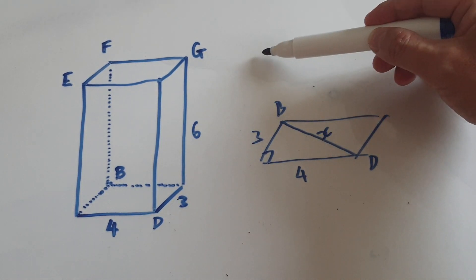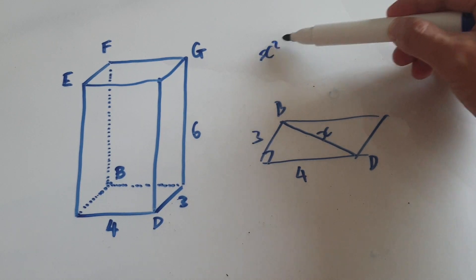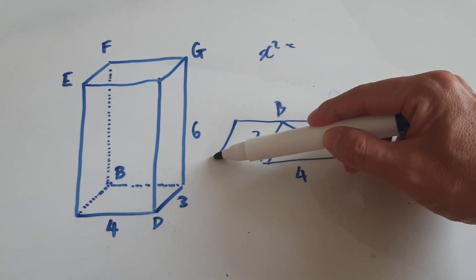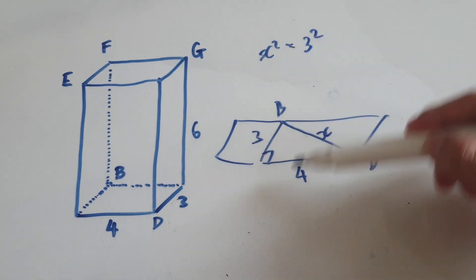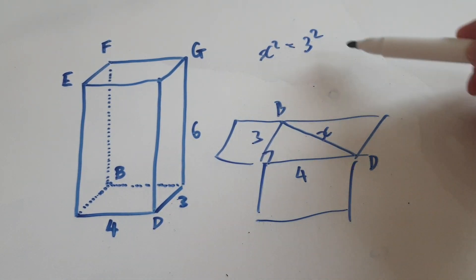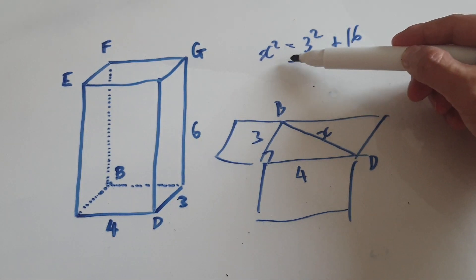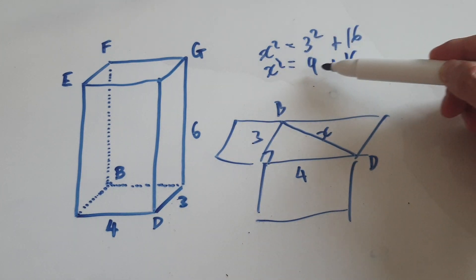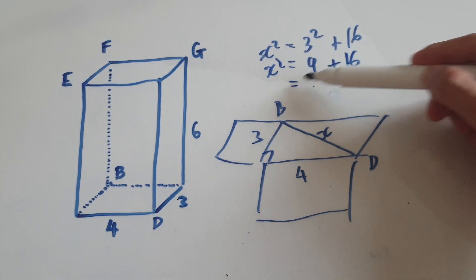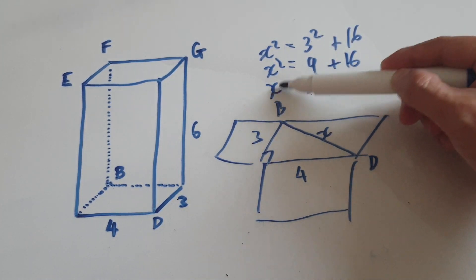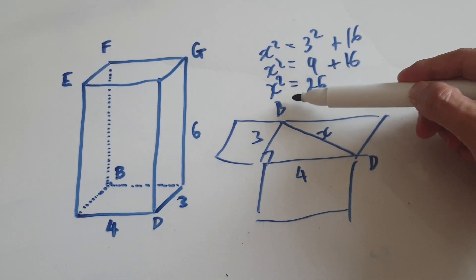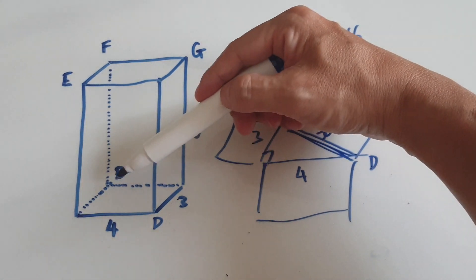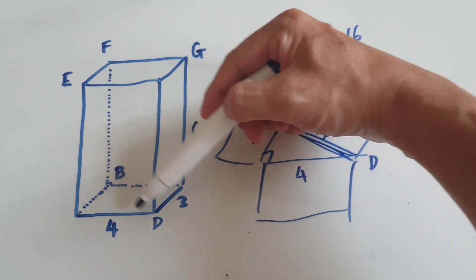So the diagonal length: x squared equals 3 squared plus 4 squared, which is 9 plus 16. x squared equals 25. Square root both sides, so x equals 5. So this diagonal length here, which is DB, is 5.